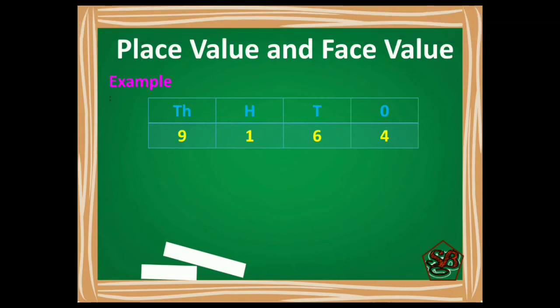So the place value of digit 6 is 6 times 10 equals 60, as it is at 10's place. And the face value of 6 is 6 only.